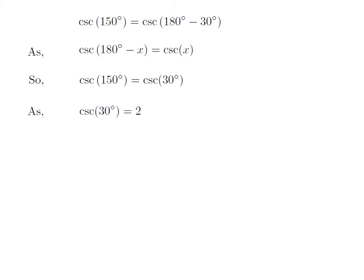We know the value of cosecant of 30 degrees is equal to 2. So, cosecant of 150 degrees is equal to 2.